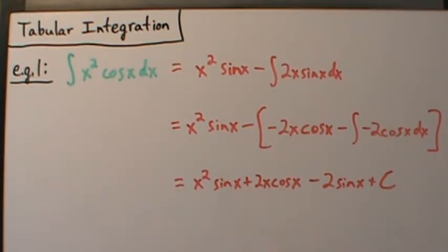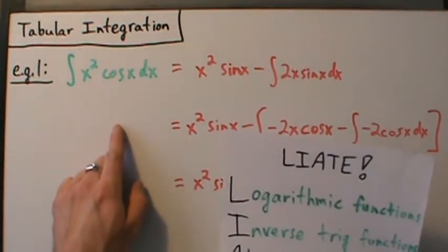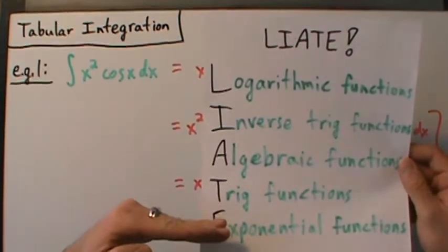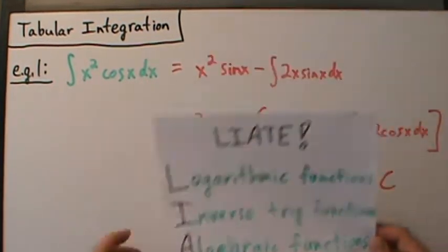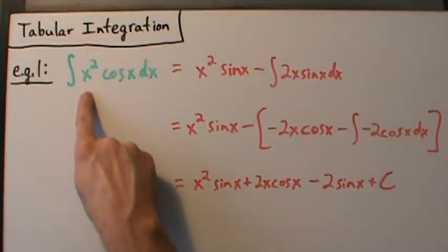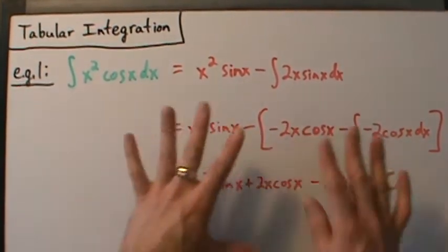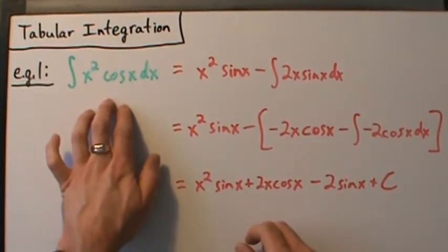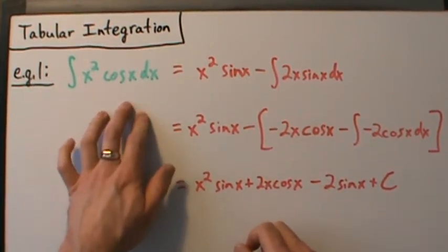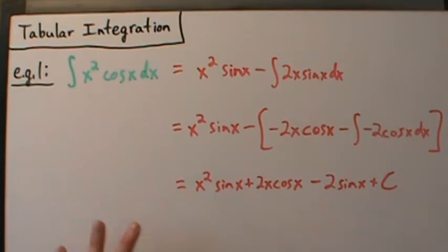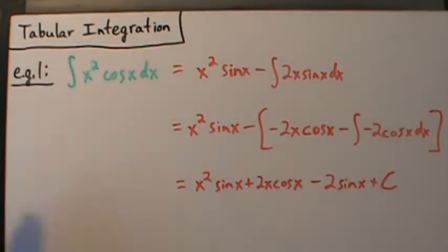We used the LIATE rule to pick u. We go down this list and choose whatever appears first to be u. This is an algebraic function, x squared, and cosine of x is a trig function. Algebraic appears first, so we choose u to be x squared. Then dv is cosine of x dx. We're going to do it again here with tabular integration to show how much easier it is.